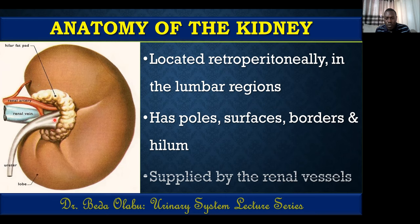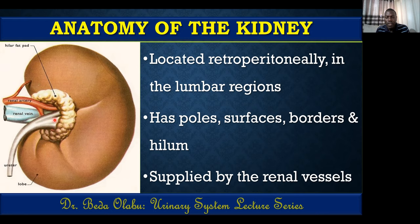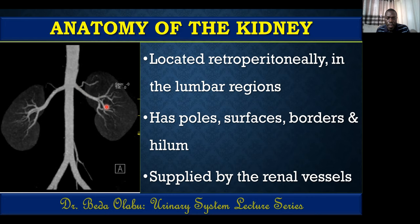The kidneys are supplied by the renal vessels. The renal artery is a branch of the descending aorta, before it divides into the right and left common iliac arteries. The descending abdominal aorta gives the right renal artery to the right kidney and the left renal artery to the left kidney. The renal veins come from the kidneys and join the inferior vena cava. That covers the external anatomy of the kidney.